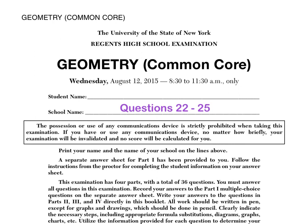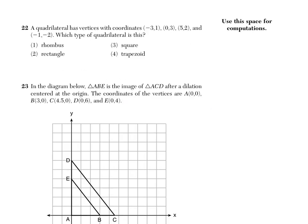This video will cover the Geometry Common Core exam from August 2015, questions 22 through 25. Number 22 says a quadrilateral has vertices with coordinates at four given points. Which type of quadrilateral is this?